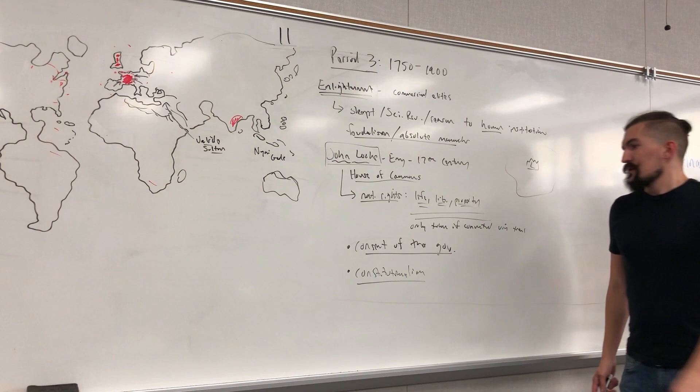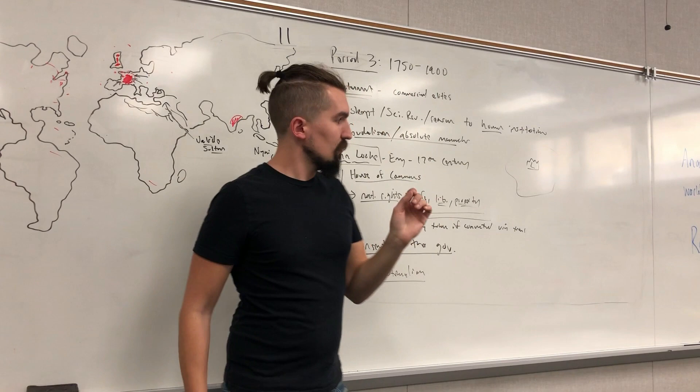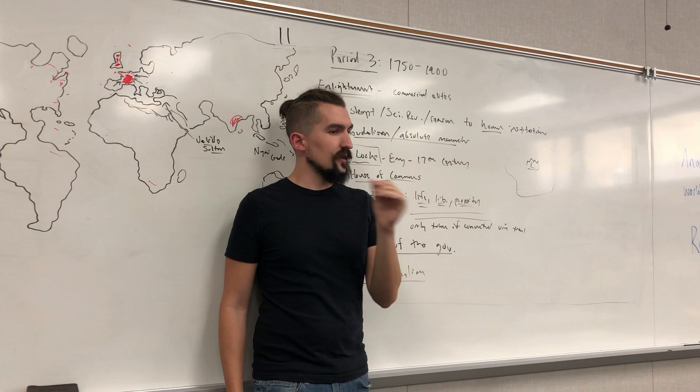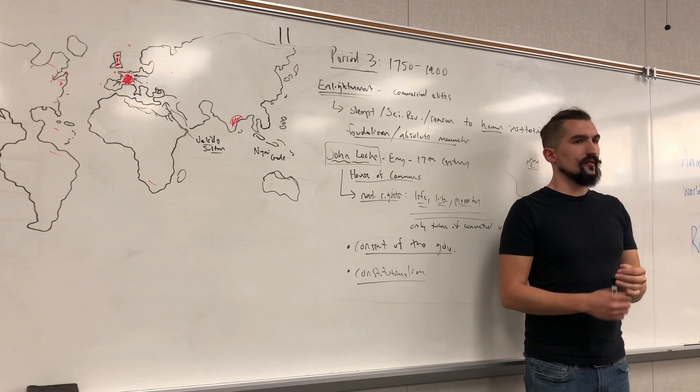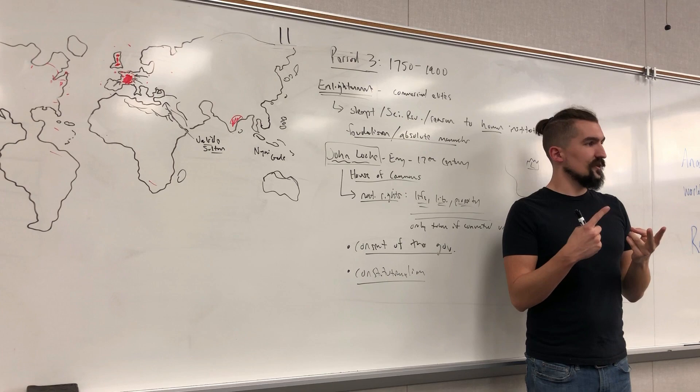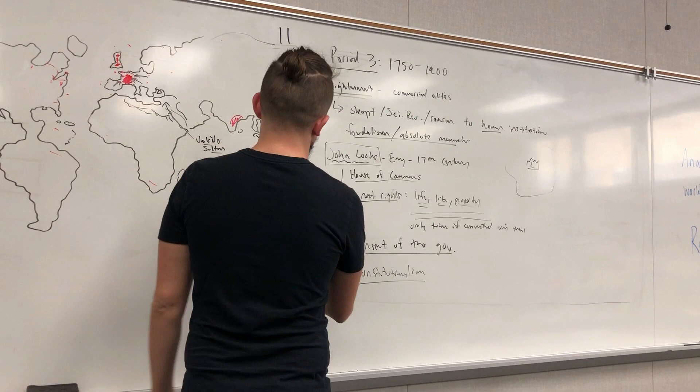In France, a noble of the robe named Montesquieu wrote a book called The Spirit of Laws. He argued that not only should we limit the monarch, but the government has three roles regarding laws: making them, enforcing them, and interpreting them. He wrote it in approximately 1742. Montesquieu developed the idea called the separation of powers.